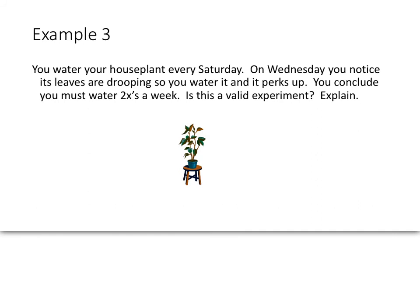Now, here's where I want you to be doing some thinking as well. You've got to ask yourself, is this a valid experiment? So you have a house plant, and you water it once a week on Saturday. And all of a sudden, one week, you notice on Wednesday that its leaves are drooping. So you water it, and it perks up. You conclude you must water two times a week. Is that a good experiment? What do you think? Well, I'll tell you this. The answer is no. This is not a valid experiment. So I want you to see if you can come up with some reasons why this is not a valid experiment. We'll be discussing that in class when you come back.